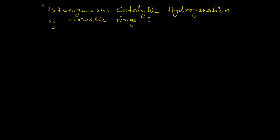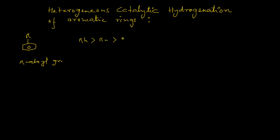In this video, we discuss some highly active heterogeneous catalysts for catalytic hydrogenation of aromatic compounds. If we consider a phenyl ring attached with an alkyl group R, the catalytic activity of different transition metals follows a specific order: highest catalytic activity is possessed by rhodium, then ruthenium, followed by platinum, nickel, palladium, and cobalt.